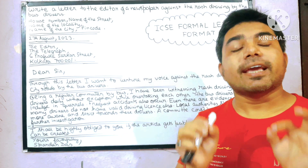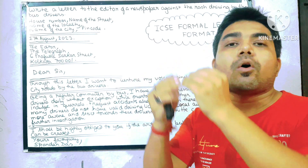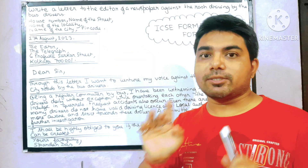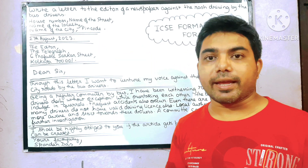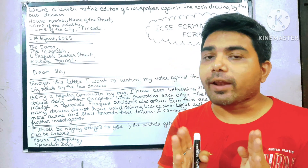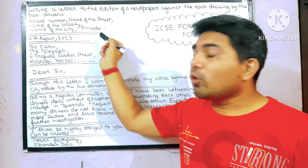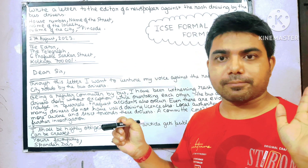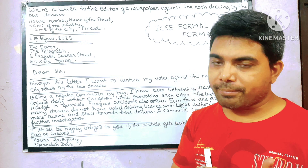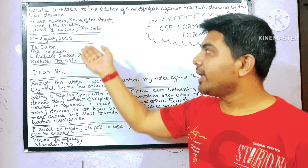However, we cannot write any name from a movie or cartoon characters — we have to be realistic. While writing the name of the street, for example if the name is Mahatma Gandhi Road, we have to write it in full. We cannot write M.G. Road or abbreviate it — we have to write in full. The pin code and name of the city are very essential. Follow this protocol: house number, name of the street, name of the locality, name of the city, pin code, full stop.